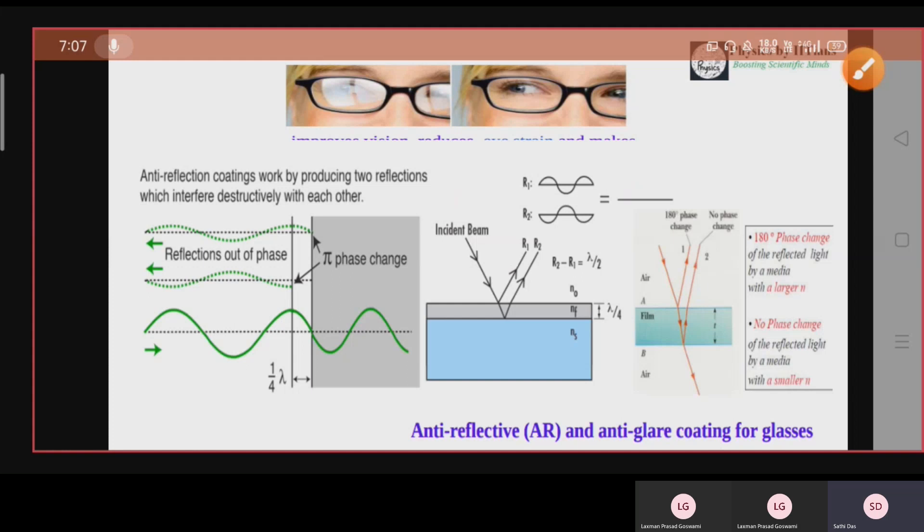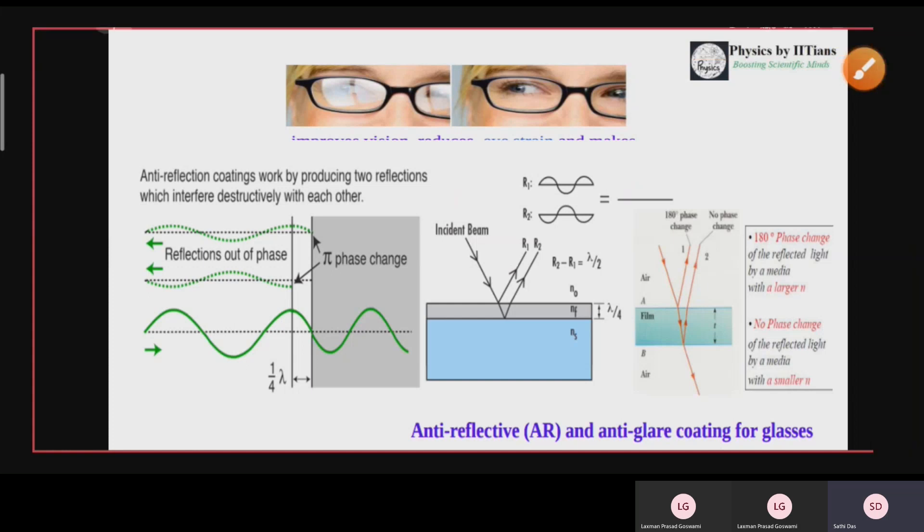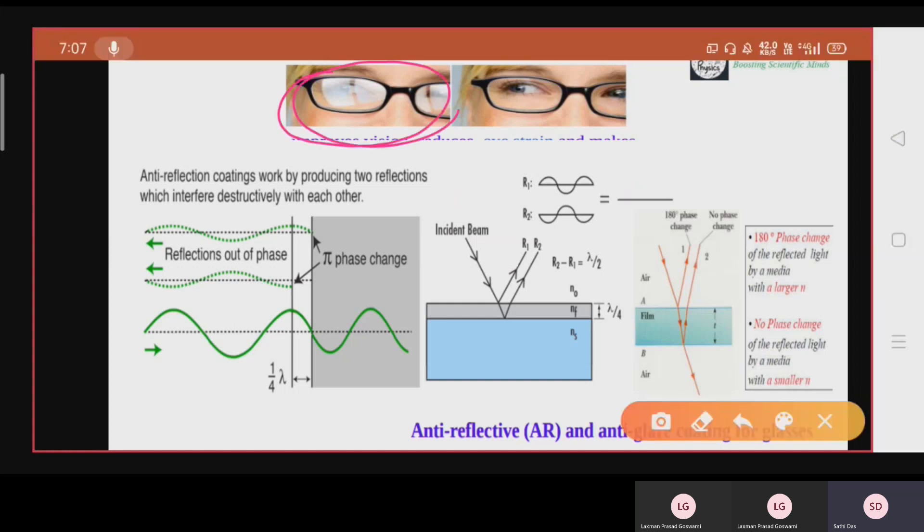Although 4% reflection is less, but although it happens, there will be serious problem. Look here. This glass has no anti-reflection coating. Here, this is the visibility problem. In this case, the reflected light is occurring, but this glass is with the anti-reflection coating. Look how clear visibility it gets whenever this anti-reflection coating is coated here. This is another beautiful diagram.